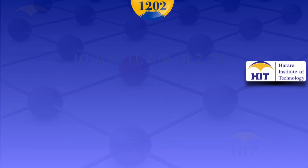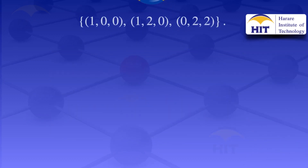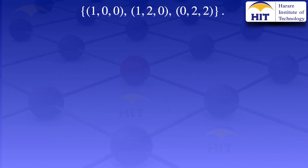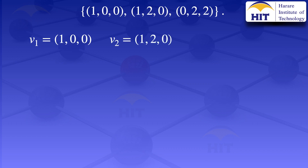Given those three vectors, I will start by naming them: V1 equals (1, 0, 0), V2 equals (1, 2, 0), and V3 equals (0, 2, 2).